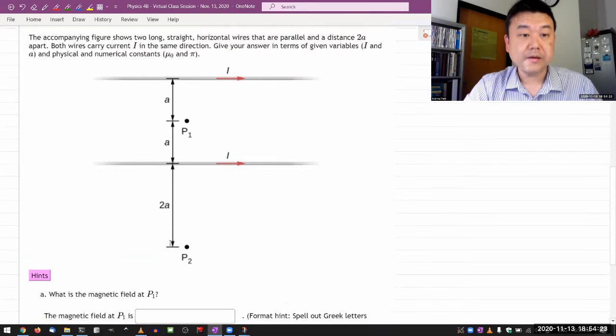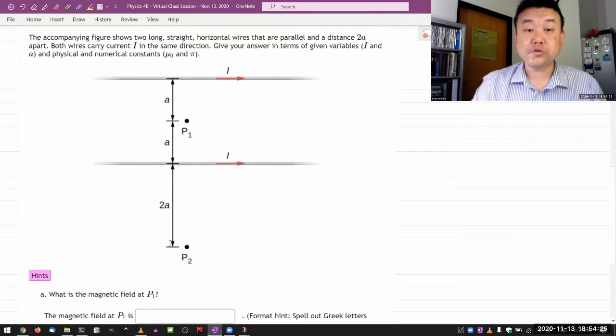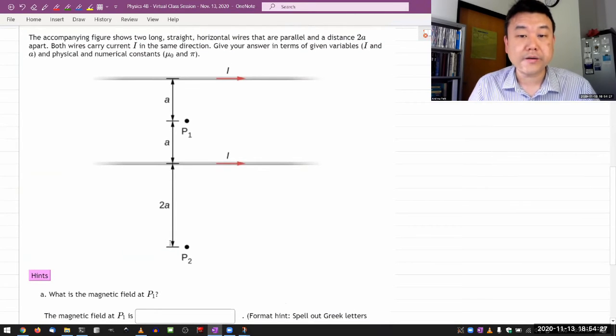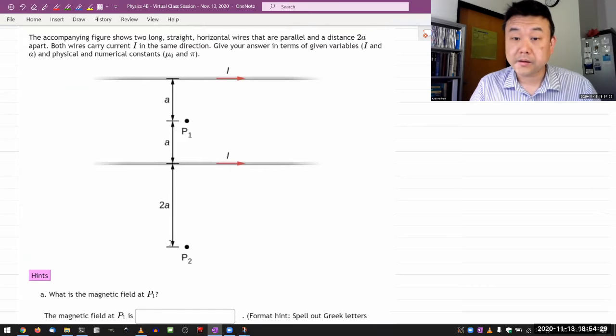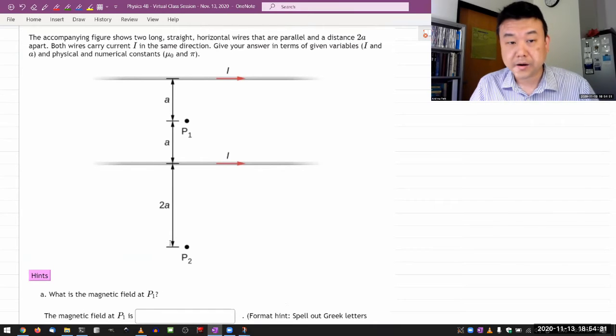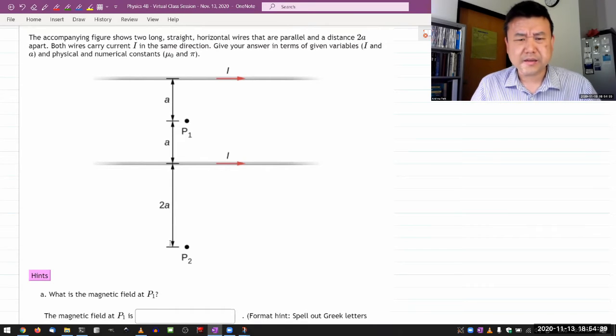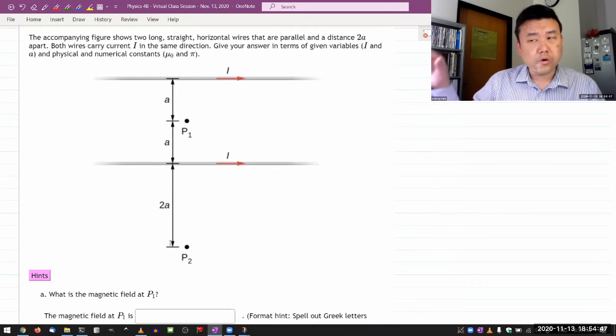Okay, so this is the setup. It's showing two long straight horizontal wires that are parallel and a distance 2a apart. Both wires carry current I. And one of the things that I think you ought to know and use is the formula for magnetic field due to the long line of current.